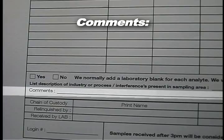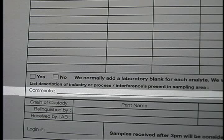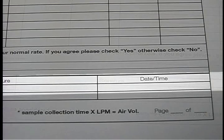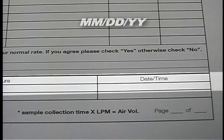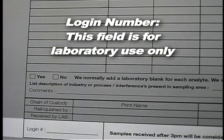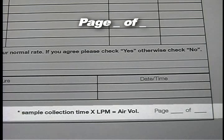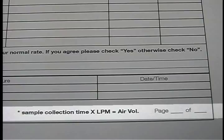Comments: Use this space for additional interferences or specific requests or explanations that could not fit in the space above. Refer to specific samples with an asterisk, double asterisk, triple asterisk, and so on. Relinquished by: Print name, provide signature, and specify date and time (Month, Day, Year, hours, minutes in military time). Login number: This field is for laboratory use only. Page number of total pages: After completing your chain of custody forms, number them using this block based on the total number of pages, numbered sequentially — for example, 1 of 3, 2 of 3, 3 of 3.